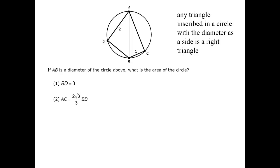This means that we can get the diameter using the Pythagorean theorem if we have both other sides of either triangle. With this in mind, let's turn to the data statements.